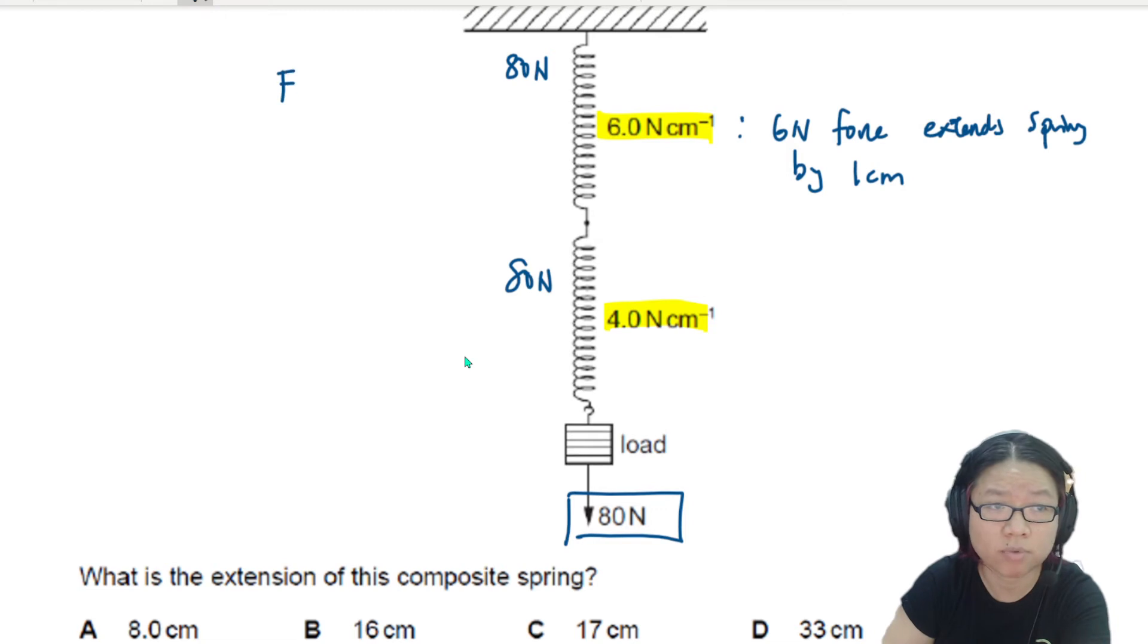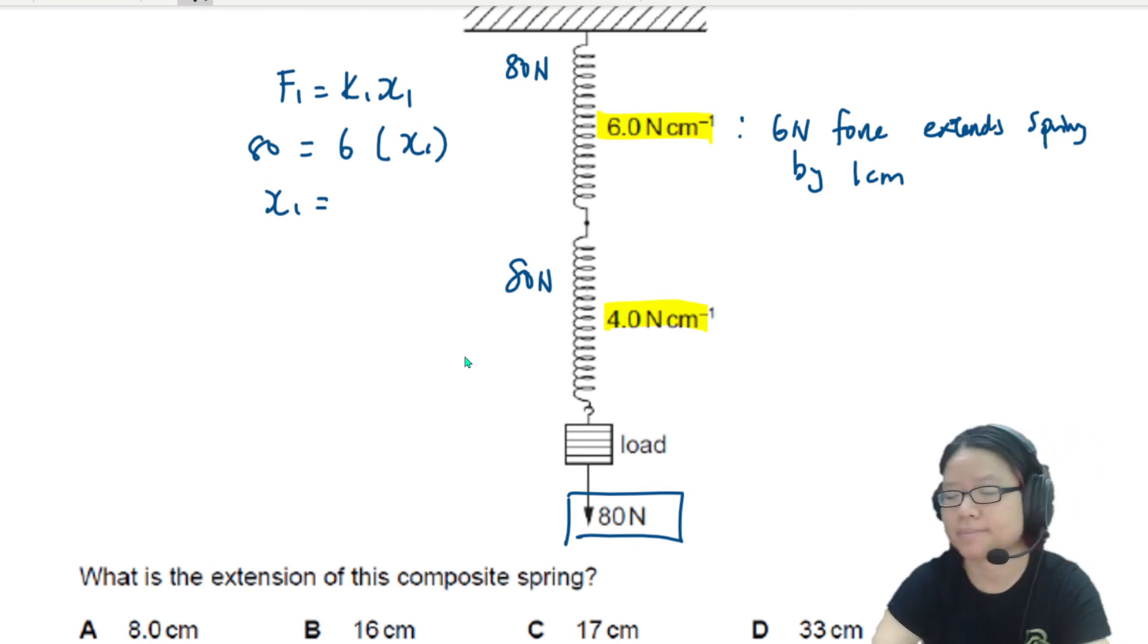So from here, I can use F1 equals K1 X1. So 80 is 6 times X1. So I can find my X1 in cm, which is 80 over 6. Sunday morning, you cannot do fraction. Okay, this is 13.3 cm.